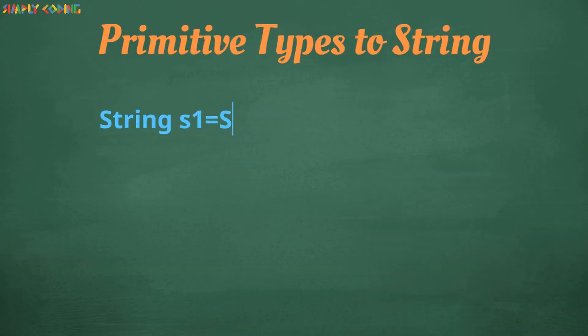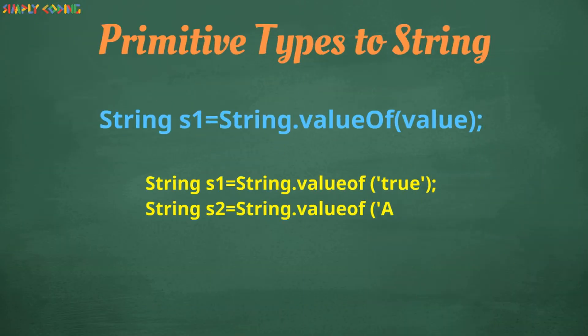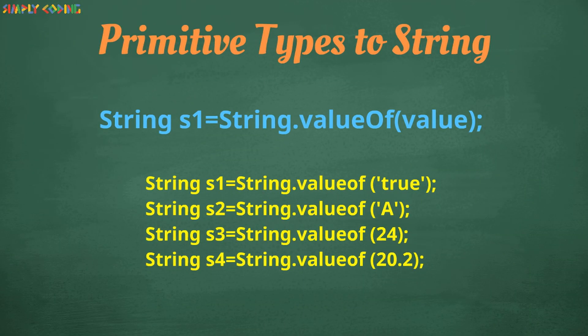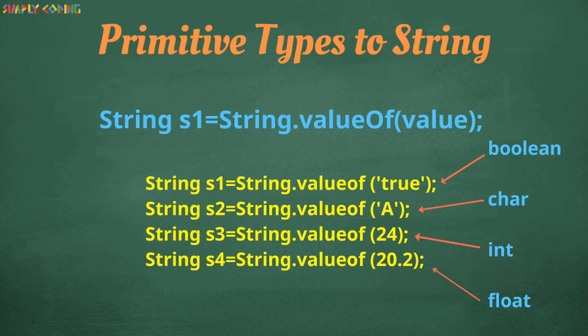Similarly, to convert any primitive type to string, we can use the String.valueOf function. It is an overloaded function and you can pass any primitive data type to it. In the next video, we will cover all member functions of the String class.